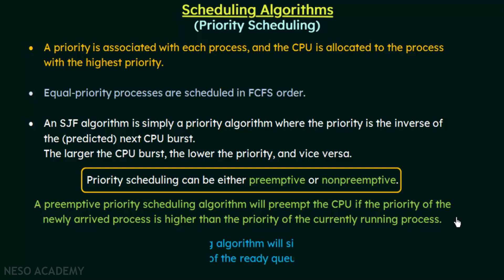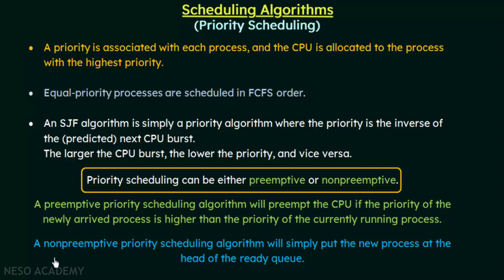In non-preemptive priority scheduling, if a new process arrives with higher priority than the one currently executing, the currently running process is not disturbed. Instead, the newly arrived process is simply placed at the head of the ready queue. When the currently executing process completes its execution, the new high-priority process will then be given the CPU.